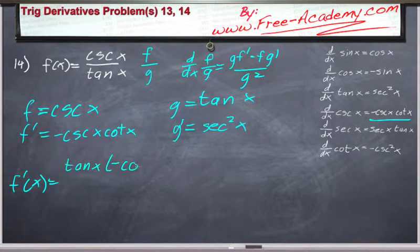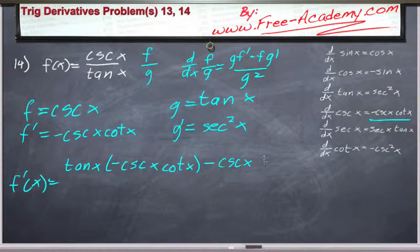times negative cosecant of x cotangent of x, minus f times g prime, all divided by g squared.